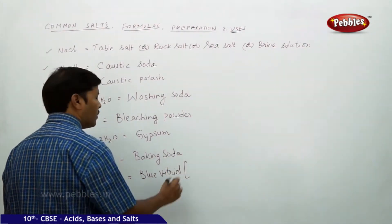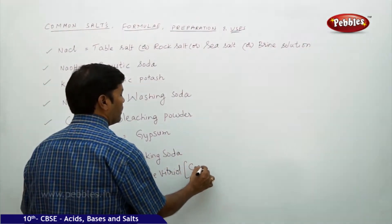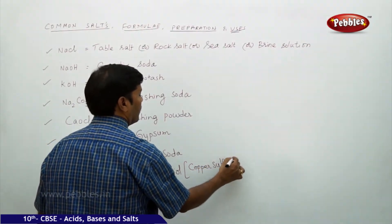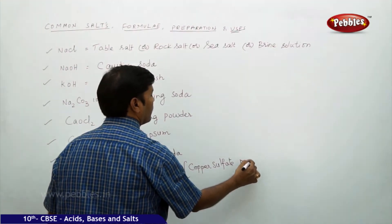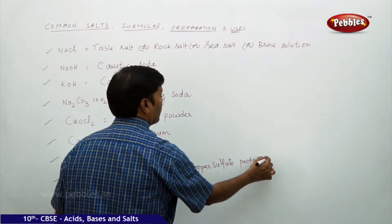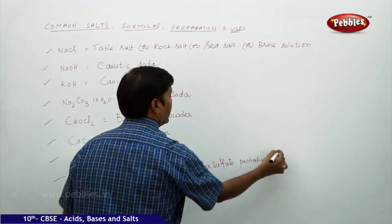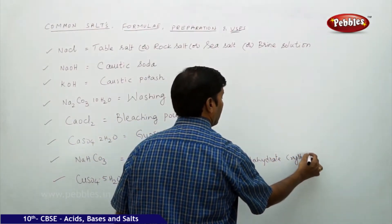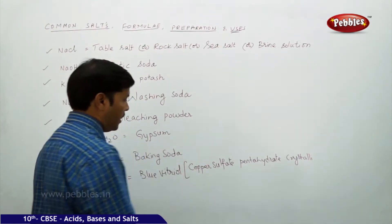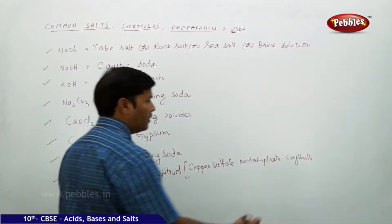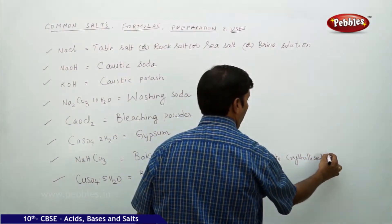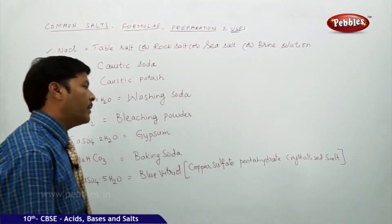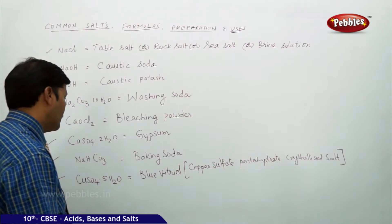CuSO4·5H2O is called blue vitriol, also known as copper sulphate pentahydrate — a crystallized salt.